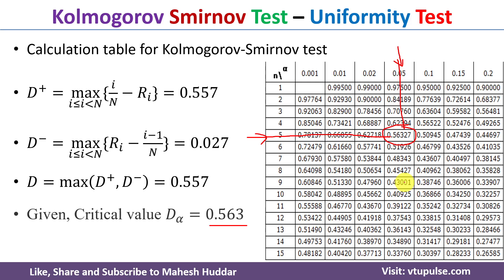This is how we check whether given random numbers are uniformly distributed or not using the Kolmogorov-Smirnov test. I hope the concept is clear. If you like the video, do like and share with your friends. Press the subscribe button for more videos and the bell icon for regular updates. Thank you for watching.